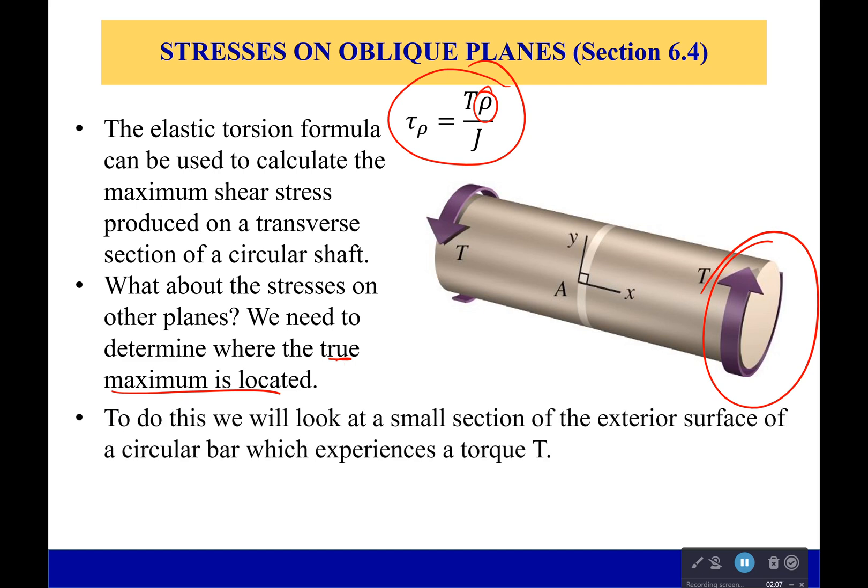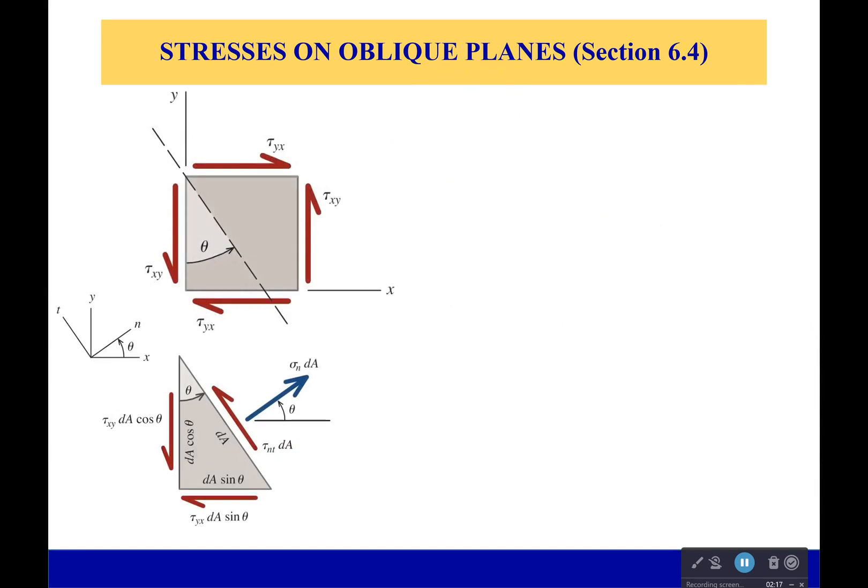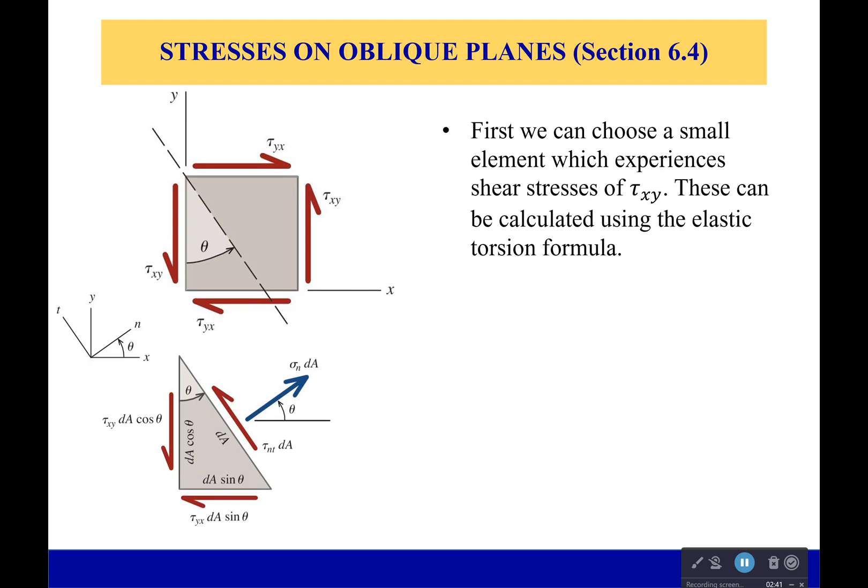So what we're going to do is we're going to look at a very small section of that exterior surface for a circular bar which is experiencing a uniform torque T. Okay so here's our little section and as we did with all those axial bars we're going to just look at it and we're going to cut at an angle and say well what would the stresses be on that angled section? Now all of our shear stresses are uniform and the same. They have to maintain equilibrium. And we can get all those using our elastic torsion formula. But we don't really care about these surfaces, we want to know what happens on the interior surface of this little element if we go to an angle theta.